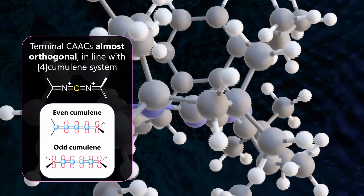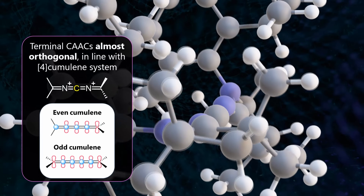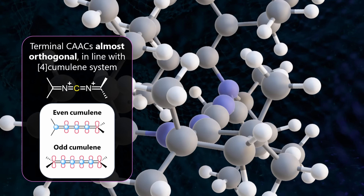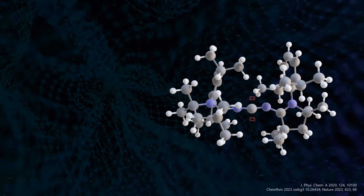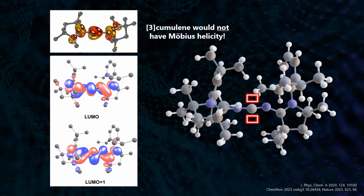This is exactly what we would expect from an even-numbered cumulene — our system is basically a nitrogen analog of a dicationic 4-cumulene. The even number relates to the number of pi bonds, not the number of atoms in the pi system. We also see the cumulenic delocalization in the structure of the LUMOs, corresponding to the empty p-type orbitals on the central C1. The frontier orbitals twist into helical Möbius shapes, which is again characteristic for even cumulenes. By contrast, odd-numbered cumulenes would have orbitals that lie in plane and are not helical.